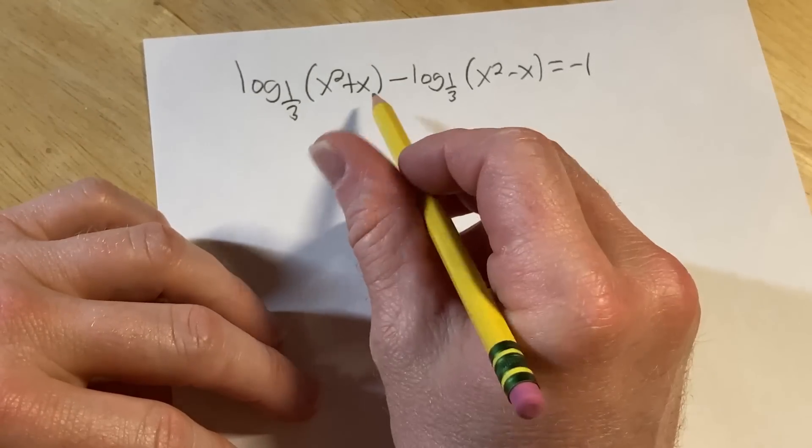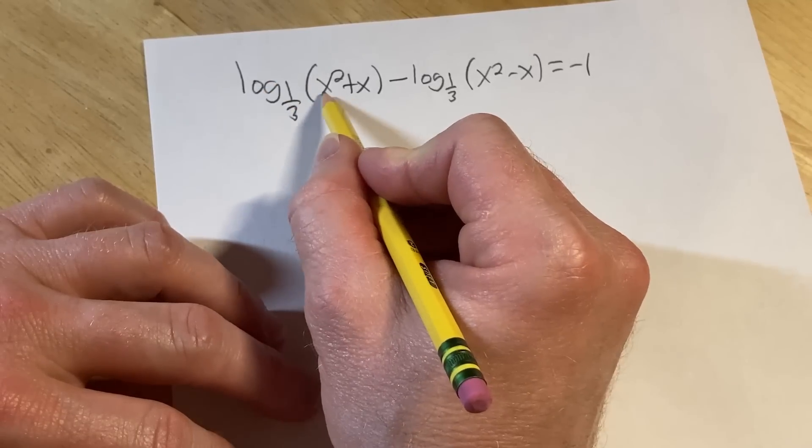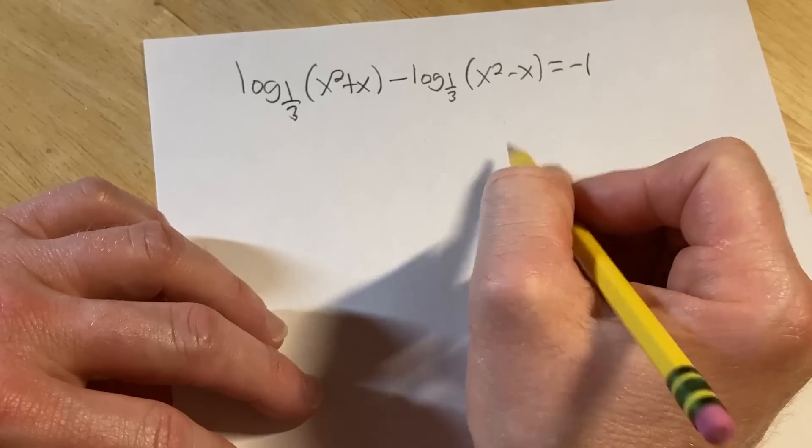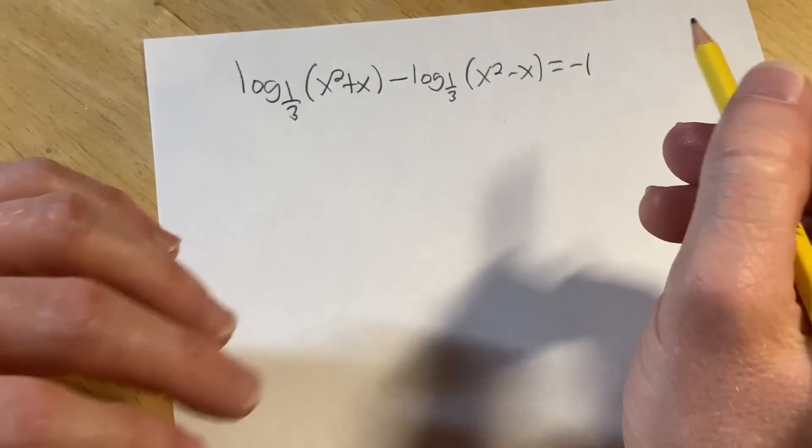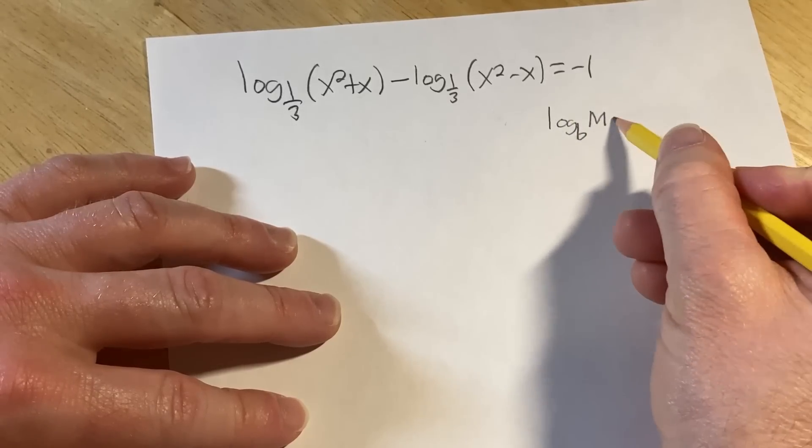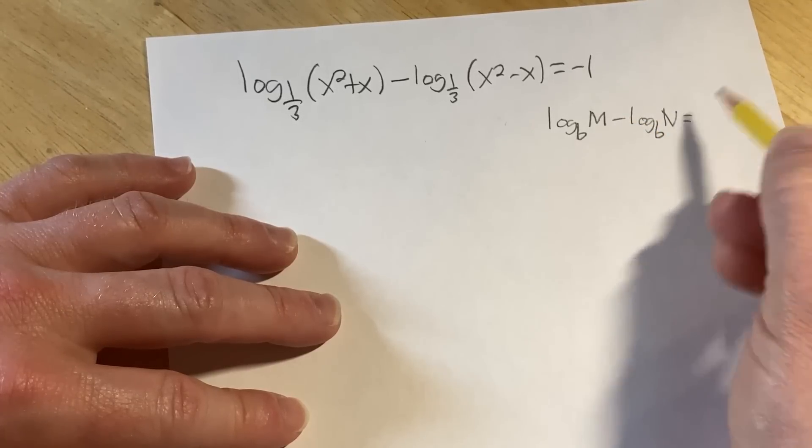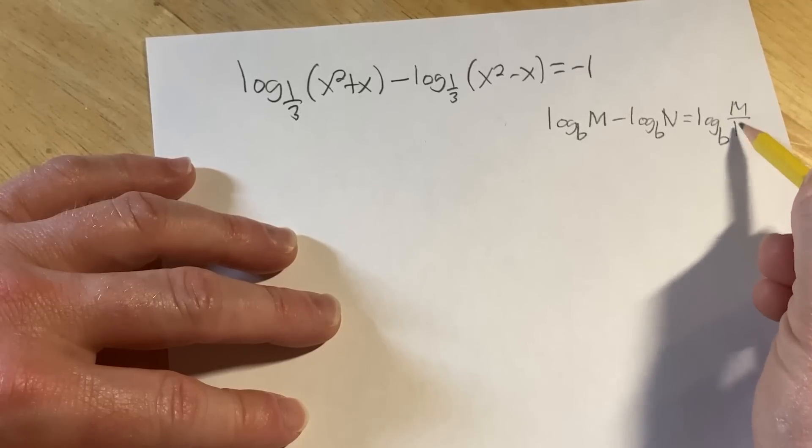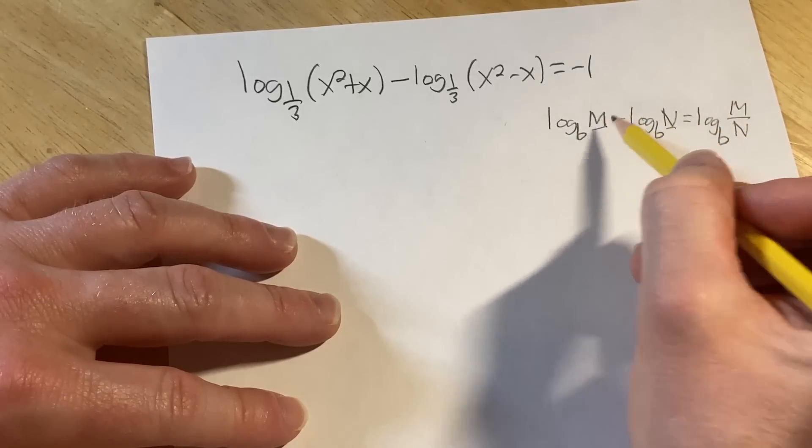So this is the problem. It's an equation with two logarithms and the logarithms have a fractional base. So we have log base one-third of x squared plus x minus log base one-third of x squared minus x equal to negative 1. So to do this problem, we're first going to start by combining these logarithms using something called the quotient rule. The quotient rule says if you have log base b of m minus log base b of n, whenever you subtract, it turns into a fraction. So the subtraction turns into a fraction. So you have log base b of m over n. And in all of this, m and n must be positive because the logarithmic function only allows positive numbers in its domain.